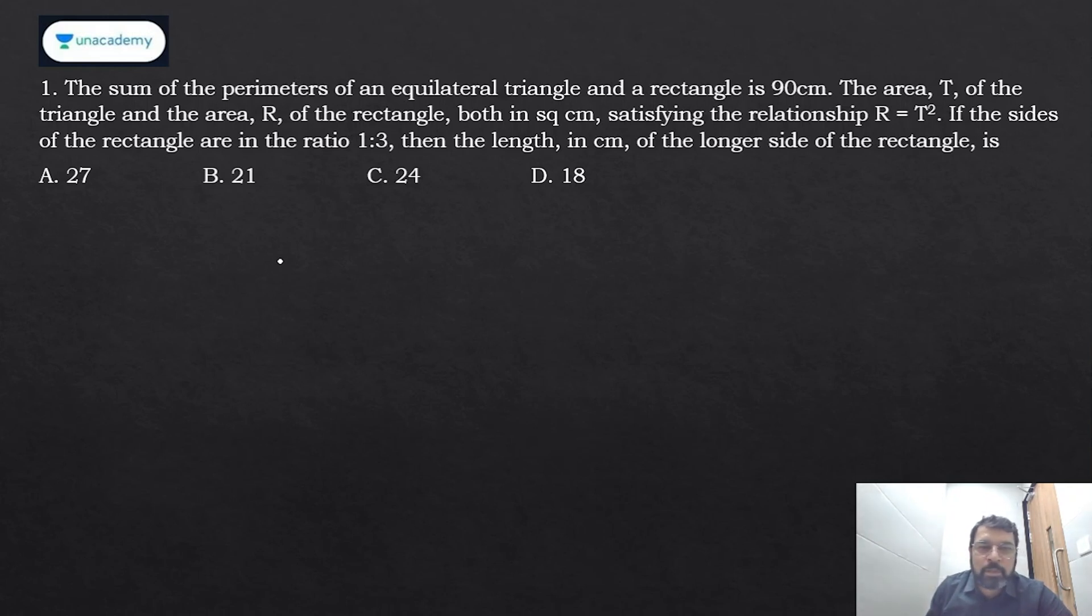The sum of the perimeters of an equilateral triangle and a rectangle is 90 centimeters. So there is an equilateral triangle and there is a rectangle. I'll try to explain in both languages—some of you are comfortable with English and some are with mixed language.